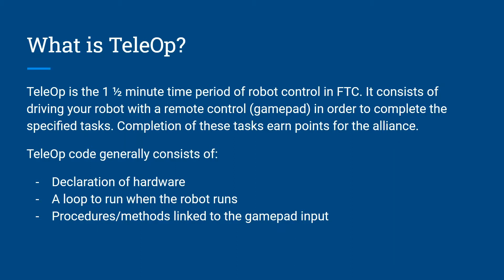The three parts that a Teleop code generally consists of are a declaration of hardware, a loop to run when the robot runs, and procedures and methods linked to the gamepad input.